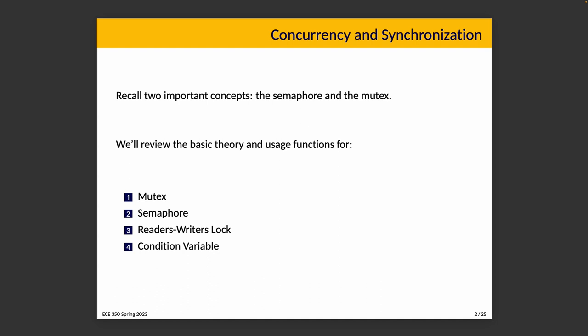We're going to review the basic theory and the usage functions for four of my favorite mutual exclusion constructs: the mutex, the semaphore, the readers-writers locks, and the condition variable. The reason why we review this is because in the next topic we're going to spend significant time talking about how to implement these things, so it's important that we examine their functionality and have it fresh in our minds.